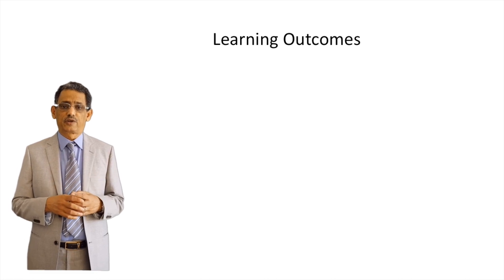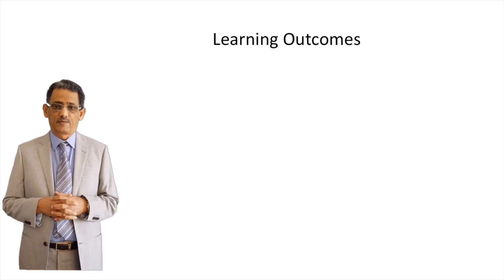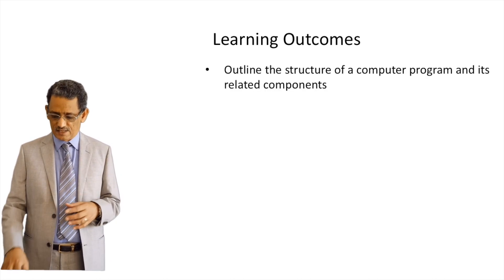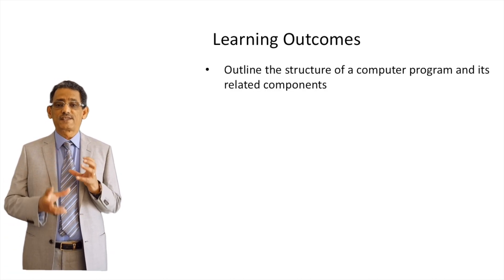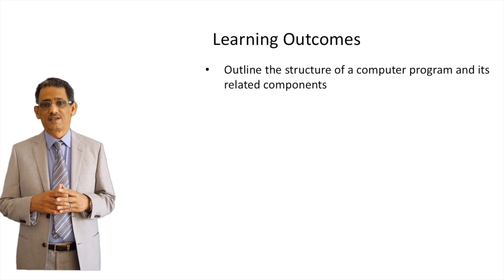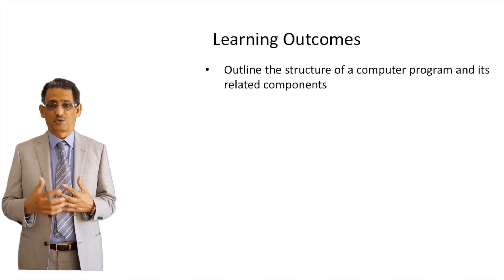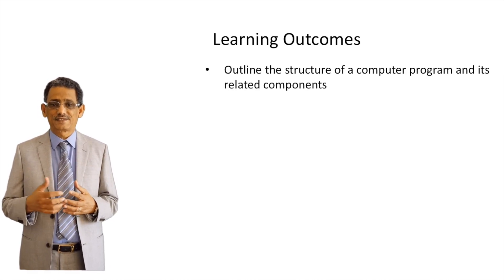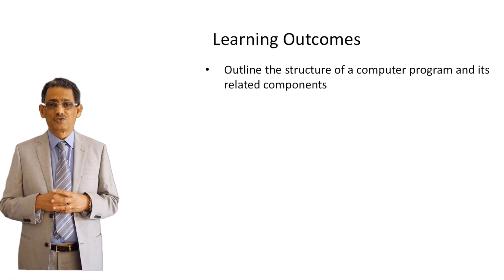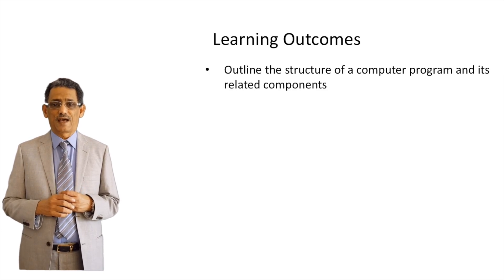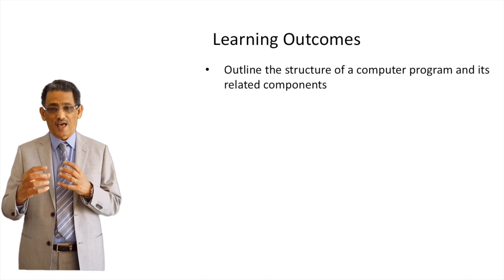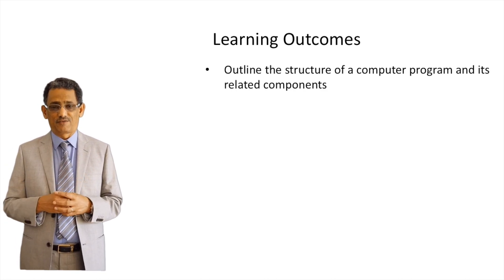We will start by talking about the course learning outcomes. There are five learning outcomes in this course. The first learning outcome focuses on introducing you to the structure of computer programs. When you write a computer program, you have to structure it the right way — there are components you should have, a sequence you need to follow, and integration with other code in your program.